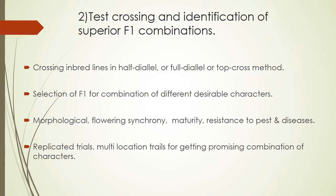Test crossing and identification of superior F1 combinations involves crossing inbred lines in half diallele, full diallele, or top cross method, then selection of F1 for combination of desirable characters — morphological, flowering synchrony, maturity, resistance to pest and disease — and replicated trials, multi-location trials for getting promising combinations.